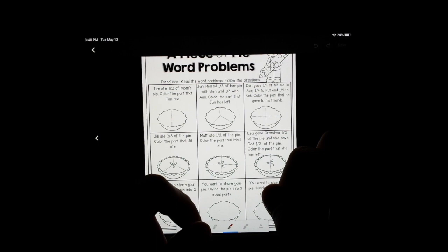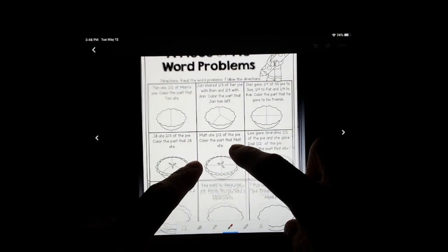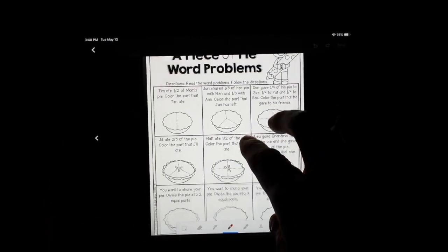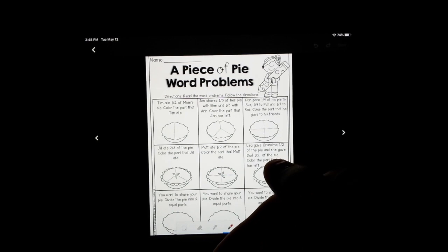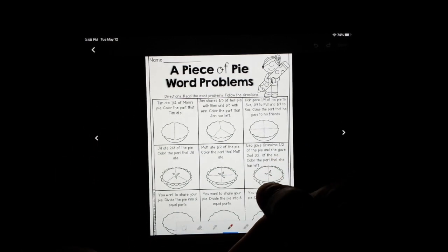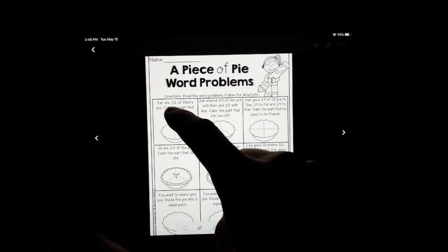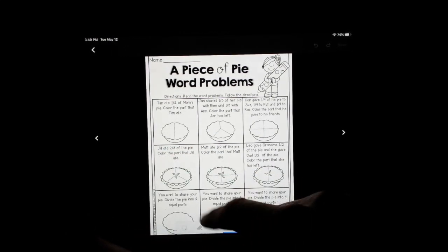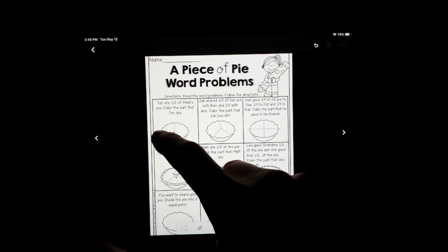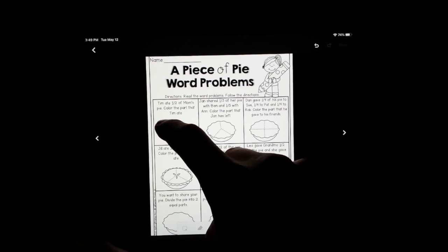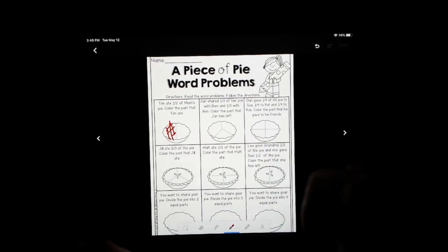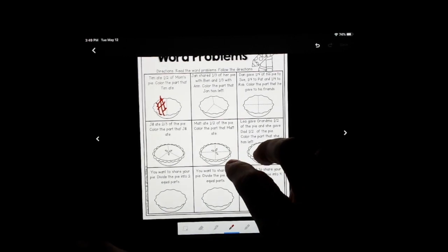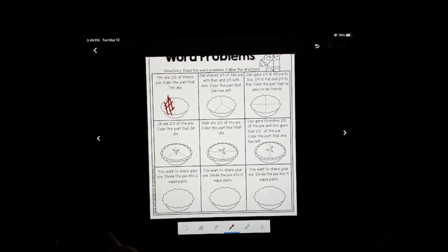Here we have word problems. So these questions just ask you to read a question that involves a fraction, and then show how that fraction would look in the picture. So Tim ate one half of mom's pie. Color the part that Tim ate. They've already divided that for you, so all you have to do is count one half. Those ones should be fairly straightforward too.